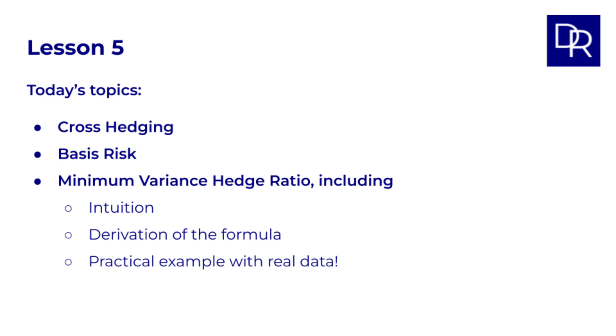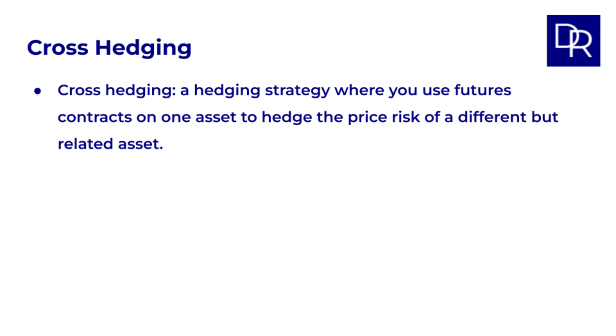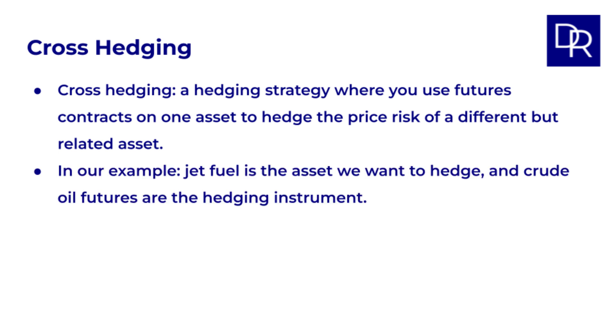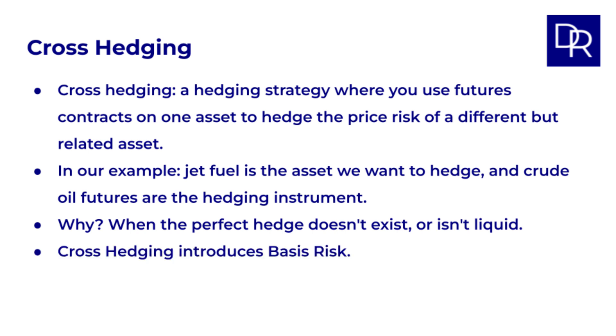So let's define cross hedging formally. Cross hedging is a hedging strategy where you use futures contracts on one asset to hedge the price risk of a different, but related asset. In our airline example, jet fuel is the asset we want to hedge, and crude oil futures are the hedging instrument. Why do we do this? Well, sometimes the perfect hedge simply doesn't exist, or isn't liquid enough to be practical. Crude oil futures markets are usually liquid, making them a good alternative. However, using a related asset introduces basis risk.